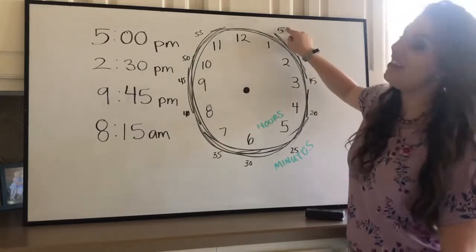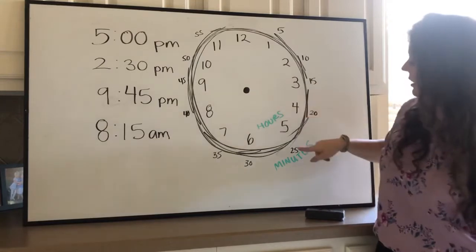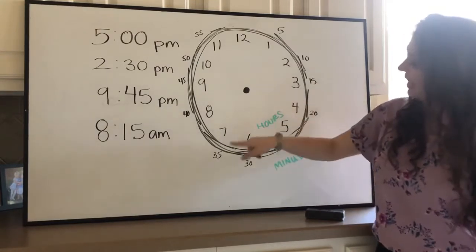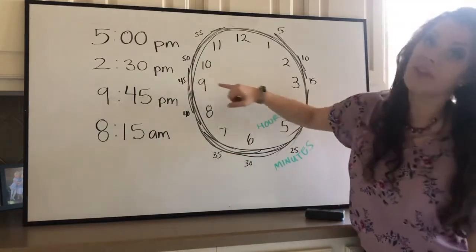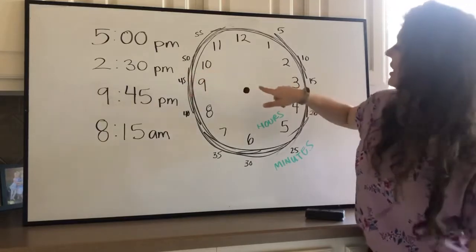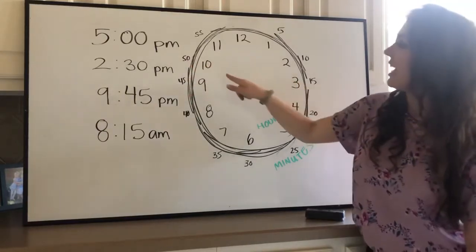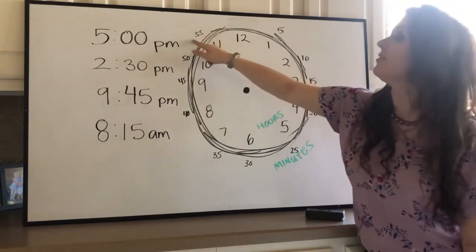10, 15, 20, 25, 30, 35, 40. If it's on the nine, if the minute hand is on the nine, that'll be 45 minutes. 50 minutes if it's on the 10. If the minute hand is on the 11, that means it's 55 minutes.